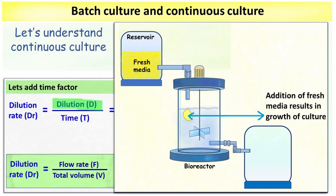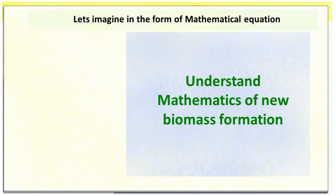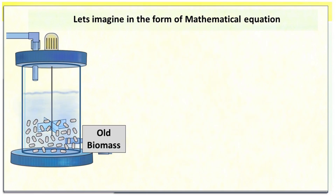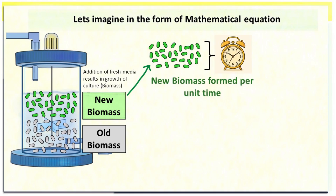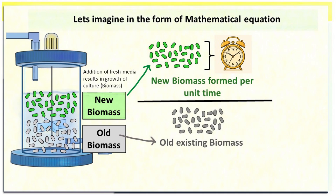It is the addition of fresh media that results in growth of our culture. The fresh nutrients from the added media are taken up by existing cells, which then divide to form new biomass. Mathematically, the new biomass formed per unit time divided by the existing biomass gives us the specific growth rate, indicated by the letter mu, with units of time inverse.